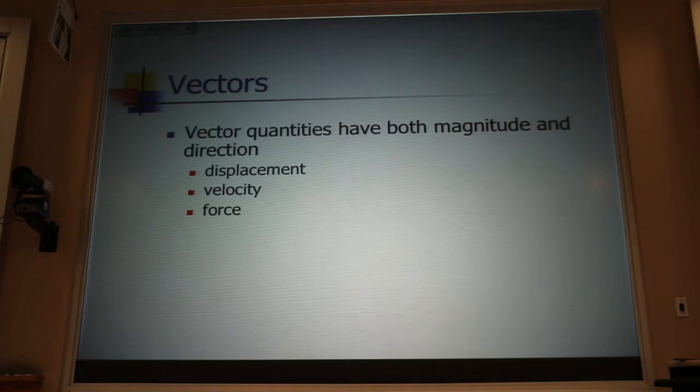Velocity is 60 miles an hour east. The magnitude of that velocity, the size of that velocity, we call speed. That's the 60 miles an hour. If you say I'm going 60 miles an hour, that's just the magnitude, that's the speed. If I say I'm going 60 miles an hour east, that's velocity. That's a vector.